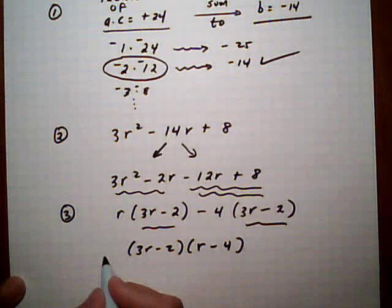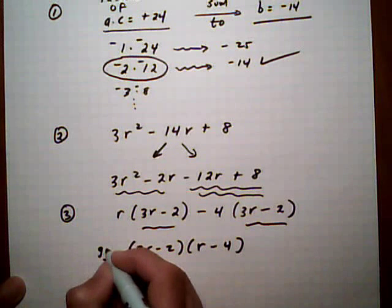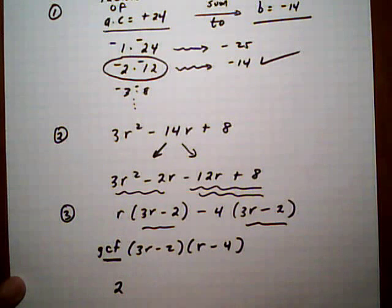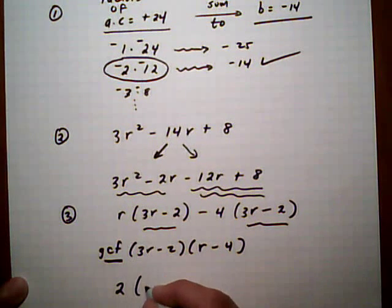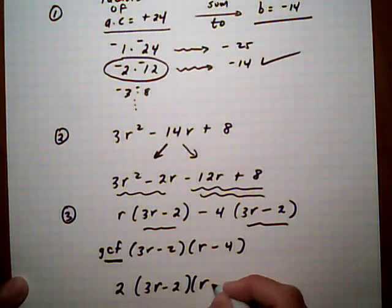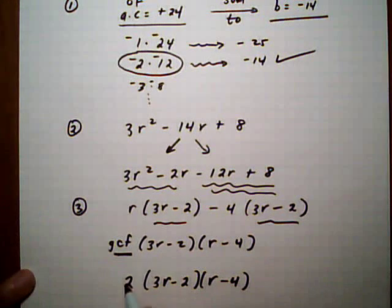This is factored. We just got to remember we've got that GCF from up at the top. Reinsert that into your final answer. So that was a 2 up there, times 3r minus 2, r minus 4. And that's the final answer.